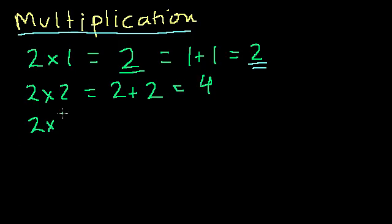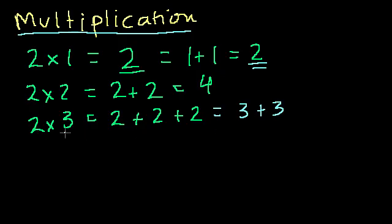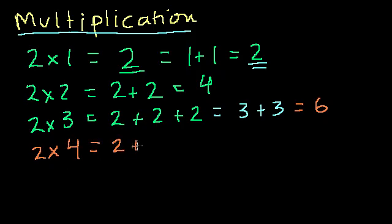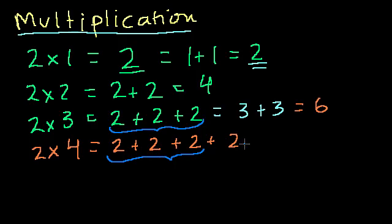What's 2 times 3? That's 2 plus 2 plus 2, which can also be written as 3 plus 3 — either way it equals 6. What's 2 times 4? That's 2 plus 2 plus 2 plus 2. Notice it's exactly what 2 times 3 was, but now I'm just adding another 2 to it. So 2 times 4 is going to be 2 more than 6, which is equal to 8.